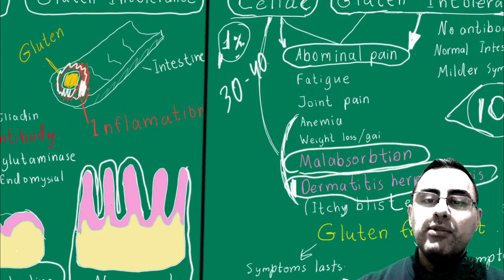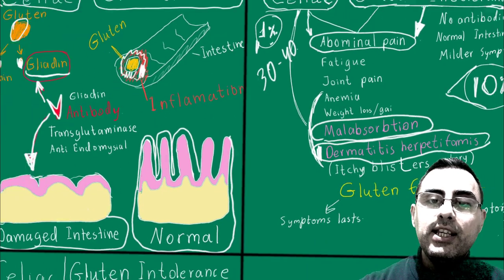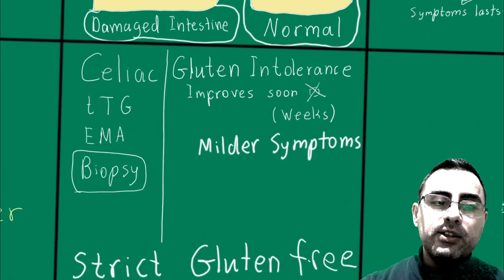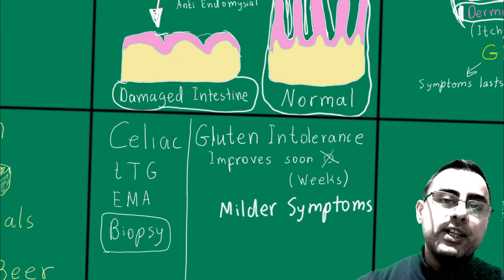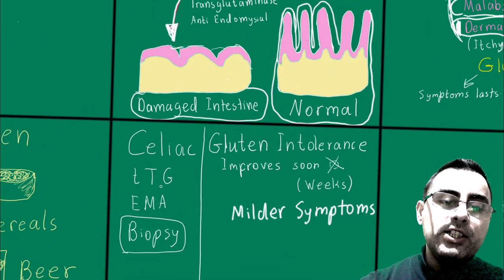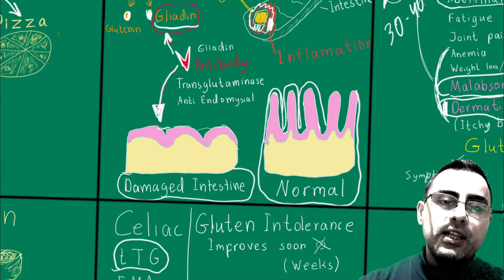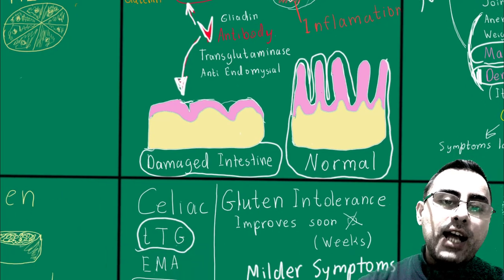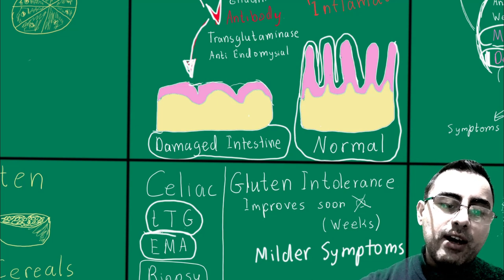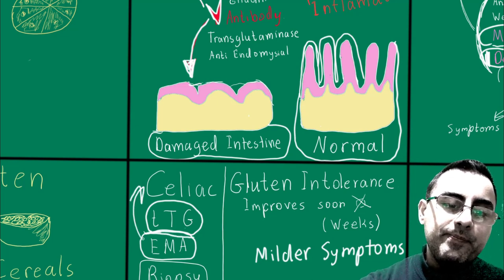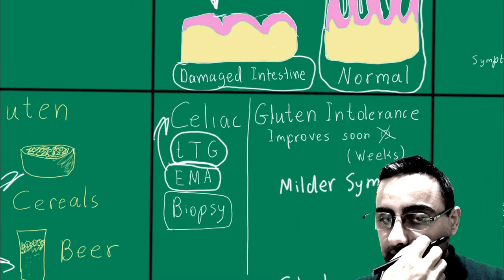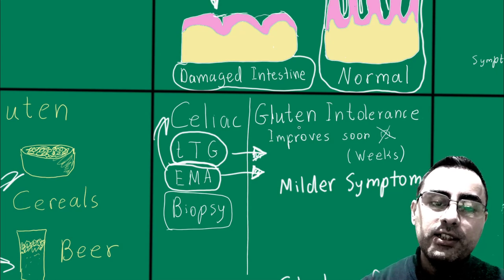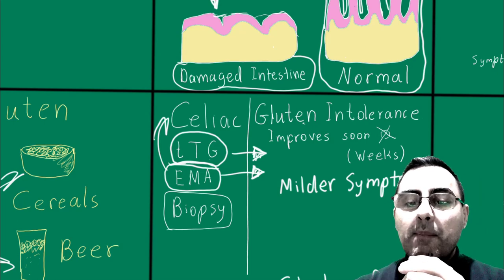In the case of celiac disease, symptoms can last and it may take several months to recover. For diagnosis, antibodies are important. We have TTG antibodies — transglutaminase antibodies — and anti-endomysial antibodies, or EMA. These antibodies are detected in blood and indicate celiac disease. However, gluten intolerance can also show these antibodies, so they are not specific to celiac disease alone.